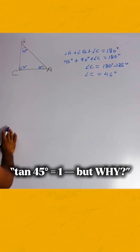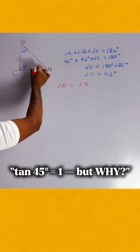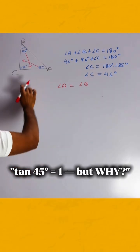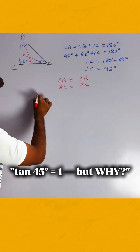We can clearly say that angle A and angle C are both equal, that is 45 degrees. And we all know the property of triangles: if two angles of a triangle are equal, then the opposite sides of those angles are also equal.